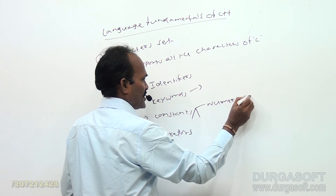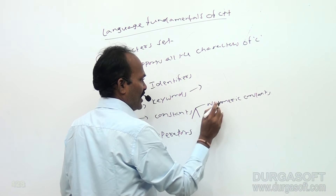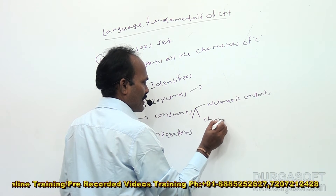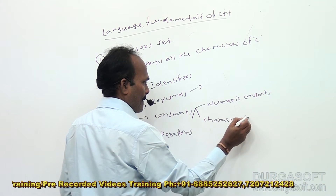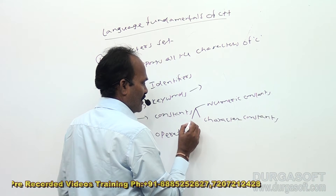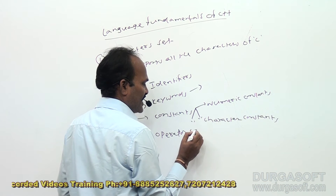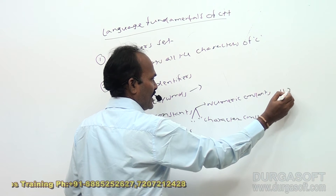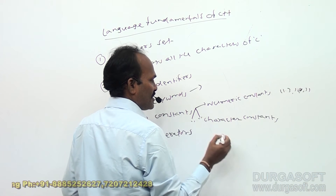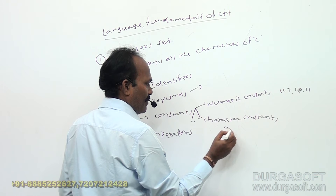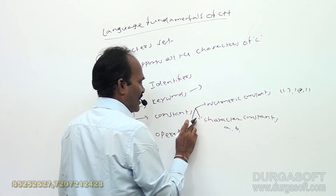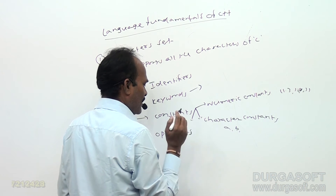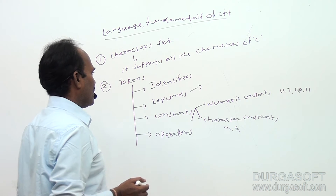Under constants, we have numeric constants, character constants, and string constants. For example, numeric constants include values like 11.3, 10, 11. Character constants are single characters like A or B. String constants are a group of characters. These all fall under the constants category.